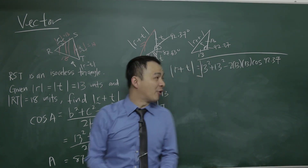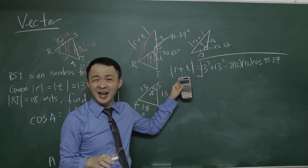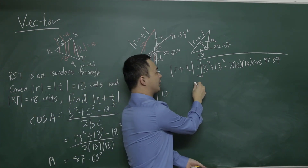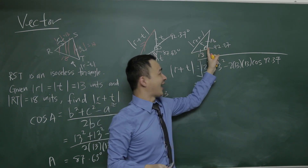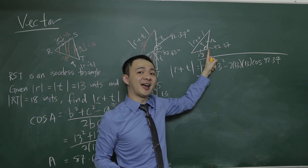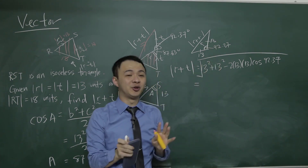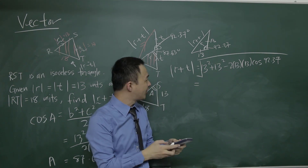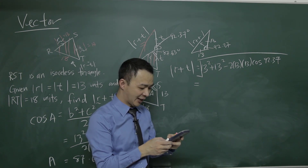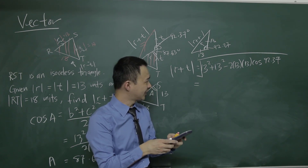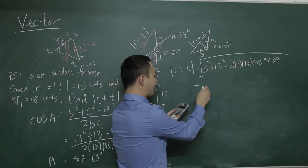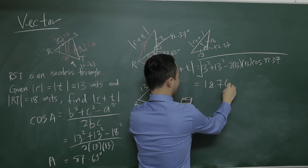I take the square root because the cosine rule gives a² on the left side, so I move the square root to the other side. B and C are the two sides of the angle. I type it into the calculator: 13² + 13² − 2 × 13 × 13 × cos(92.37°), then take the square root. My final answer is 18.76 units.